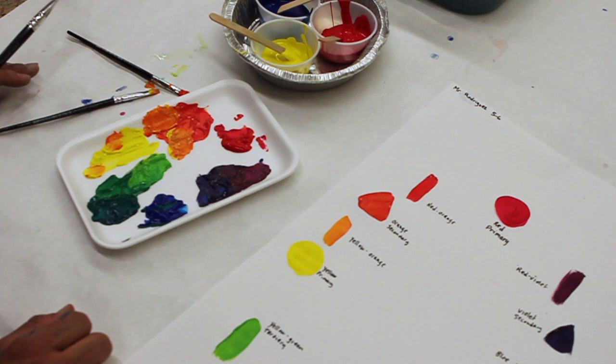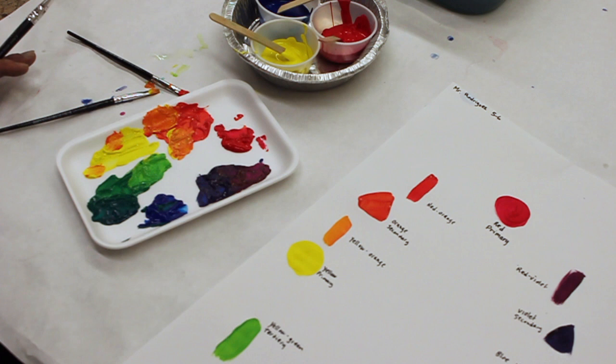So here we have the 12 colors of the color wheel. We have the three primaries, red, yellow, blue. In between them there are three colors each. Those are the secondary and the two tertiaries.